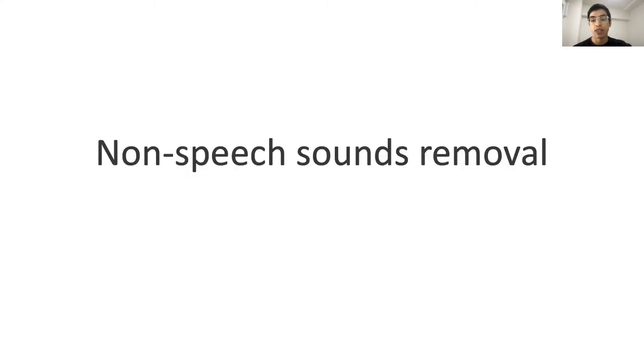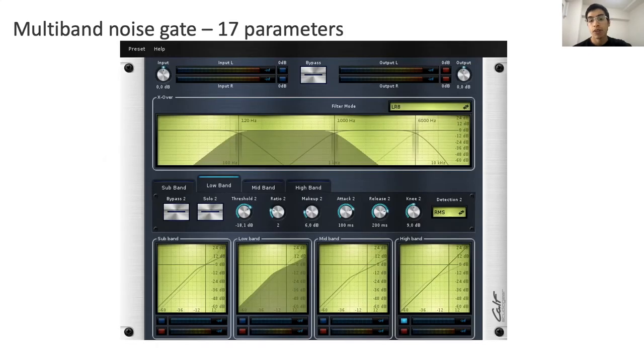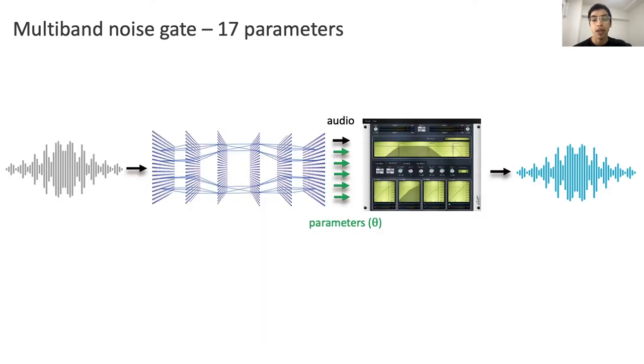The second task is non-speech sound removal. Removal of non-speech vocal sounds, such as breaths or lip smacks or voice pops, is a common task performed by sound engineers. This task can be done manually by editing the audio waveform or by using audio processors. Both of these approaches can be time-consuming, require expert knowledge, and to the best of our knowledge, the automation of this task has not been investigated yet. For this task, we're going to incorporate this multiband noise gate into our network, and similarly, we will train our model to use 17 of its parameters.